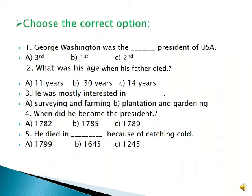Number 3: He was mostly interested in blank. Option A: surveying and farming. Option B: plantation and gardening. The correct option is A — surveying and farming. Number 4: When did he become the president? The correct option is C — 1789.